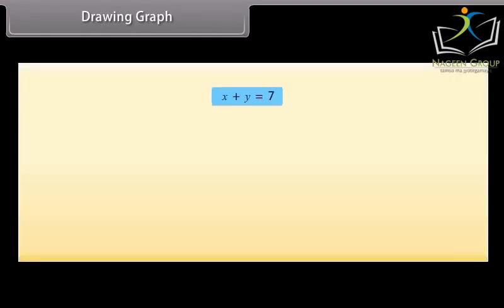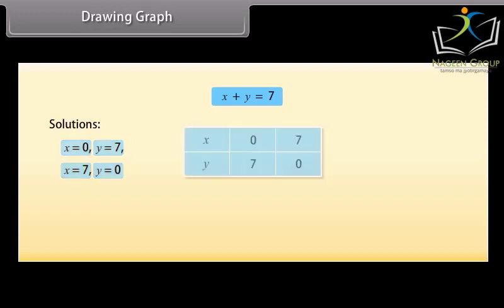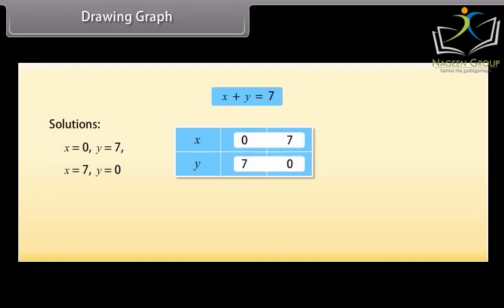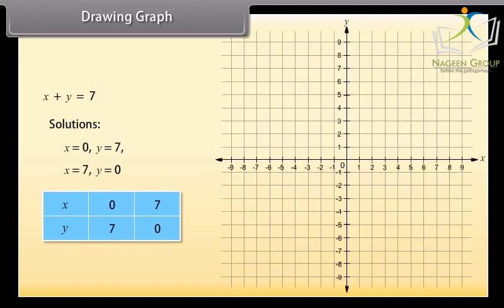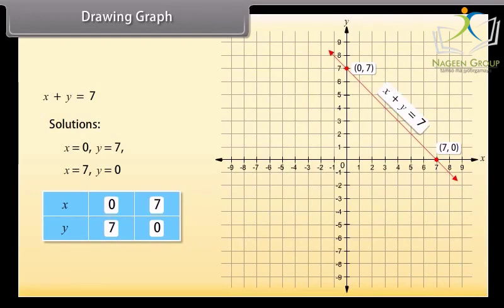Drawing Graph. Let us draw the graph of X plus Y equals 7. To draw the graph we need at least two solutions. The two solutions are: X equals 0, Y equals 7, and X equals 7, Y equals 0. We use a table with these values. Plotting both points and joining them gives the required graph for the given equation.